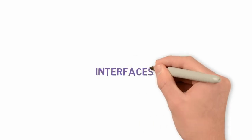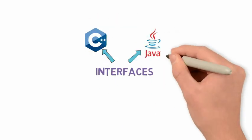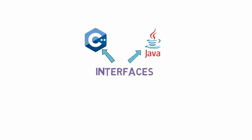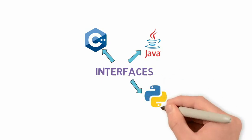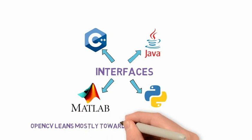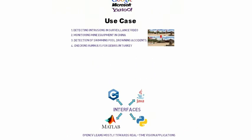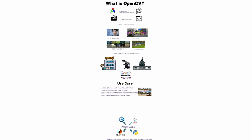OpenCV is quite flexible and has four interfaces: C++, Java, Python, and MATLAB. OpenCV leans mostly towards real-time vision applications and makes computer vision fun and easy to implement.